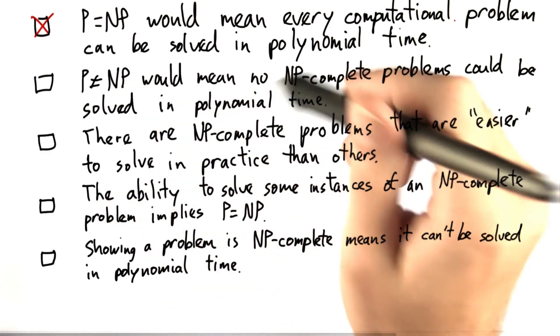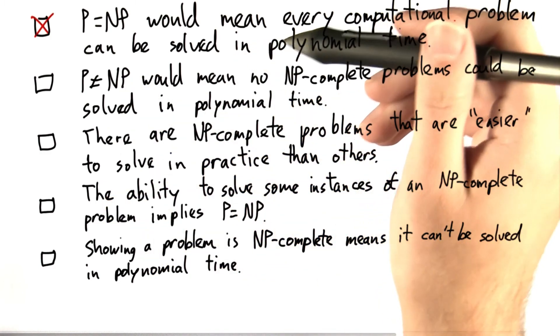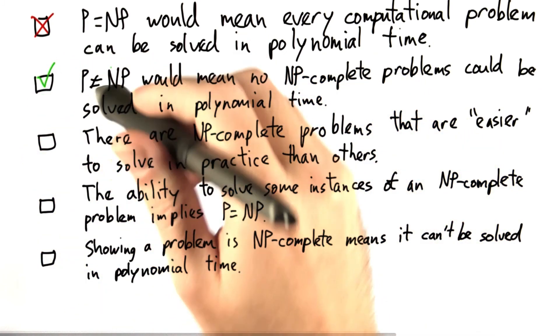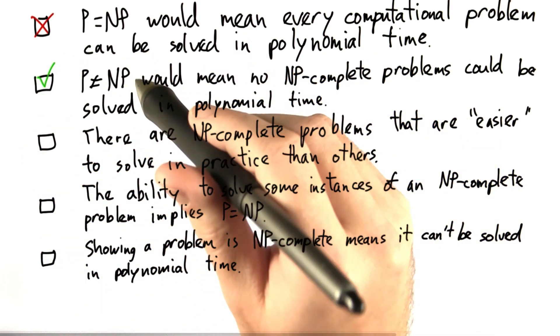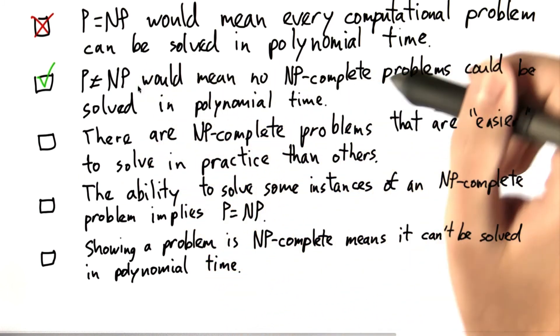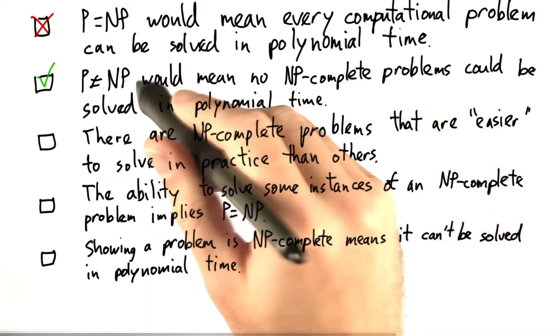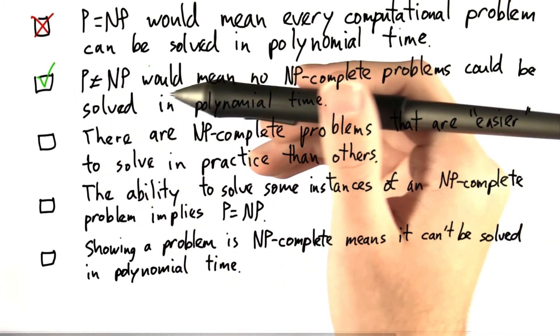And that's a case where the clever construction doesn't actually help you out. So this is not the case. However, the next one is true. If P were not equal to NP and we proved this, then that would mean that no NP-complete problems could be solved in polynomial time. That's in fact part of the definition of P not equal to NP.